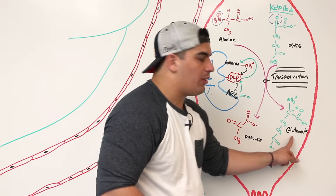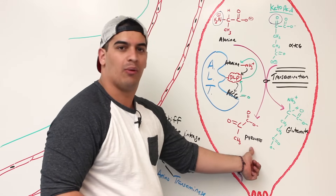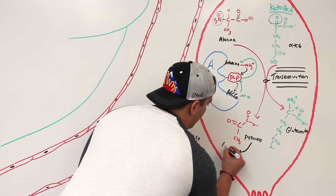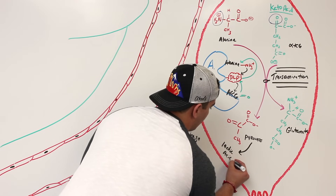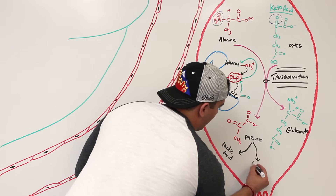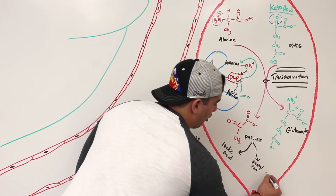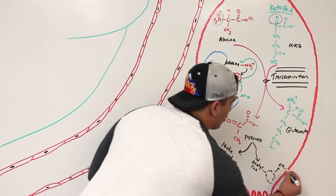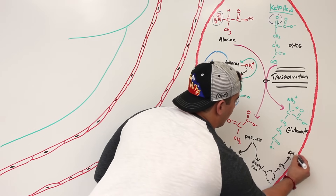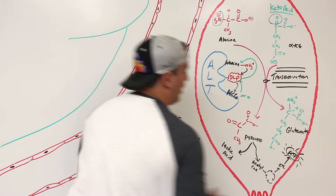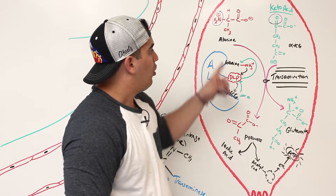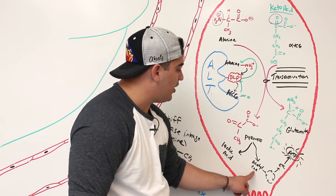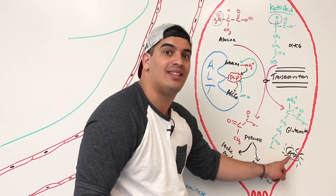Now, what can we do with this pyruvate and with this glutamate? In the muscle cell, I can take this pyruvate and do two things with it. One is I can convert it into lactic acid. The other is I can convert it into acetyl-CoA. Acetyl-CoA can go into the Krebs cycle, and then from the Krebs cycle it can go to the electron transport chain, which allows for the production of ATP — energy.